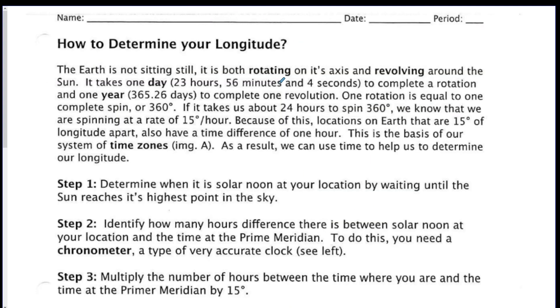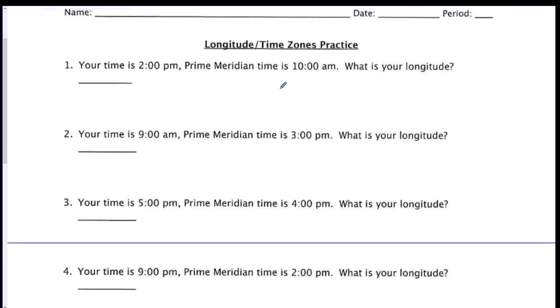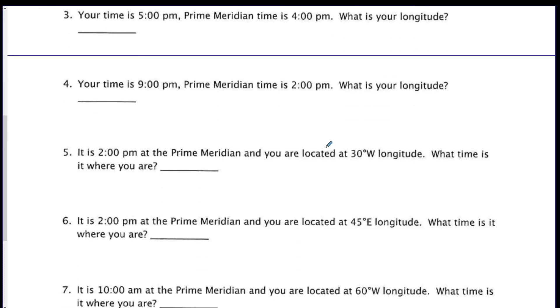Okay. Let's do one more just for fun. We'll pick one of these. Let's do number 5. It's 2 o'clock p.m. at the prime meridian, and you're located at 30 degrees west. What time is it where you are?